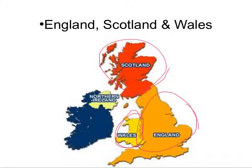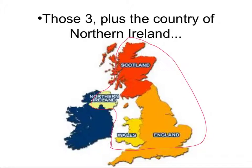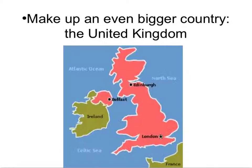Now, these three countries have their own parliaments and pass some of their own laws. In fact, Scotland and Wales have recently been pushing for a lot more autonomy. Scotland just recently decided not to declare full independence from England, which it could have done. But when you add these three countries together with another country on a different island, Northern Ireland, you have the United Kingdom.